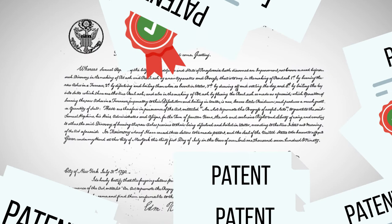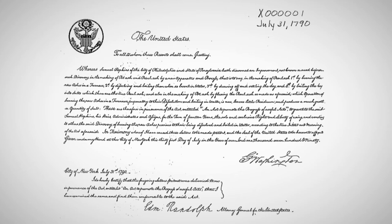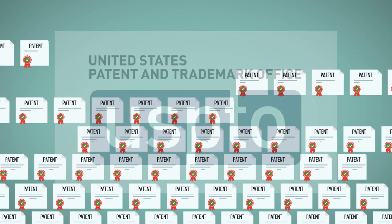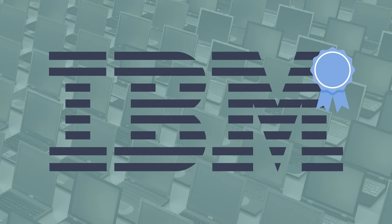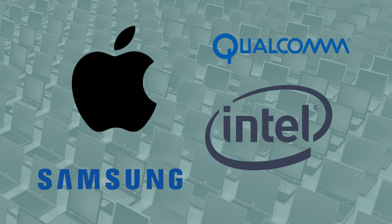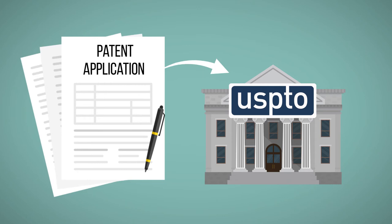The first utility patent was issued in 1790, covering the process of making potash, an ingredient used in fertilizer. Since then, the United States Patent and Trademark Office has issued over 10 million utility patents. IBM has been the leading patent recipient for 26 straight years, and it now owns over 110,000 patents. Other technology companies, including Samsung, Apple, Intel, and Qualcomm, typically are among the top 10 recipients each year.